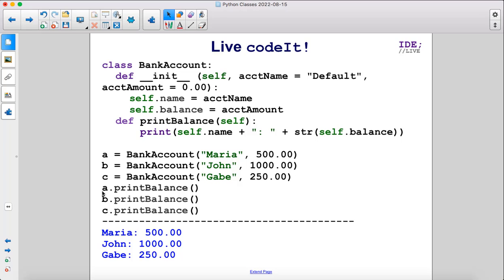So when we call a.printBalance, we're sending a as an argument. Here, it gets saved in self. So this becomes a.name and a.balance. Then b.printBalance does the same thing but with b and then finally c. And you can see that we print all of the information.